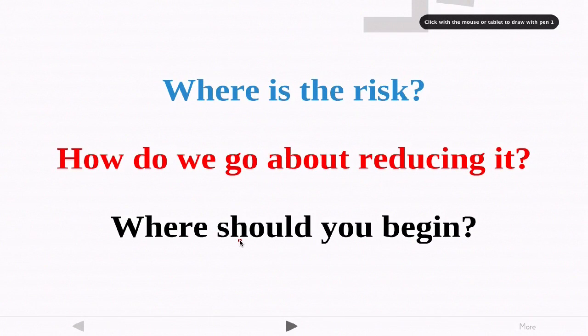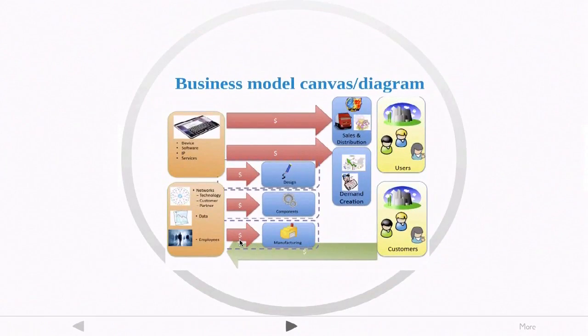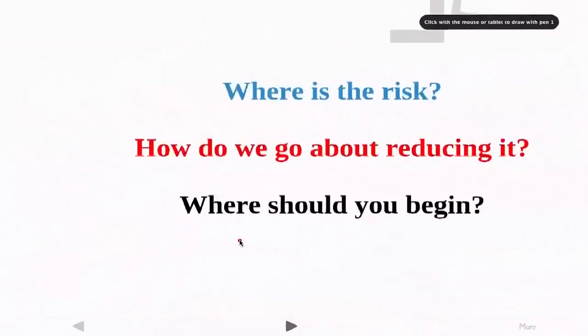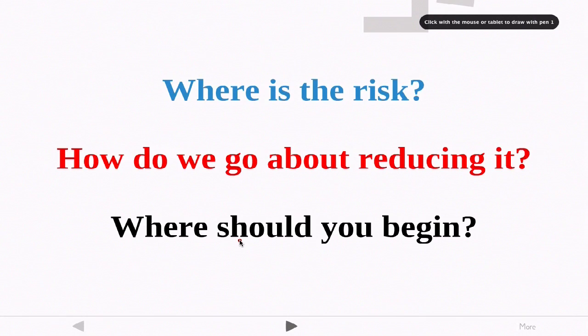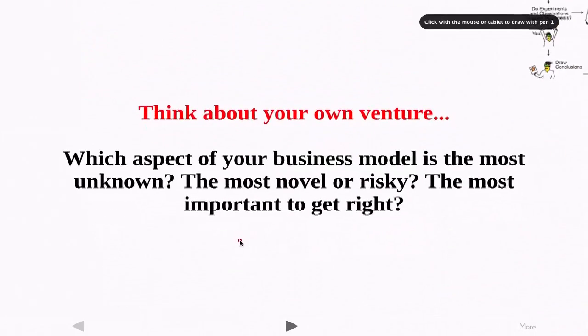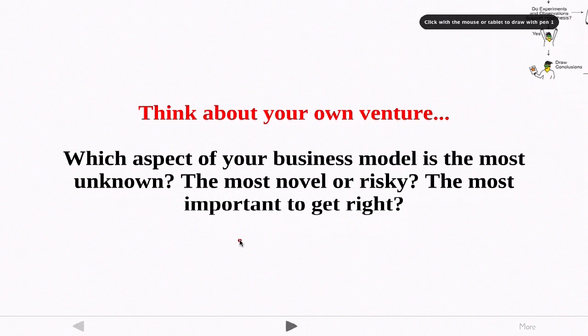And so in this business model, where is the risk? What's the riskiest part of this business model? How would you go about reducing it? Where should you begin? These are the questions that we need to think about in going through the startup process. And so when you start to think about applying customer development and this methodology in your own venture, which aspects of your business model are the most risky, the most uncertain? Which aspects are the most novel? Which piece of your business model is the most important to get right? Is it the technology? Is it the set of customers? Is it a key partner? Think through these within your own venture and we'll talk more about the next steps.